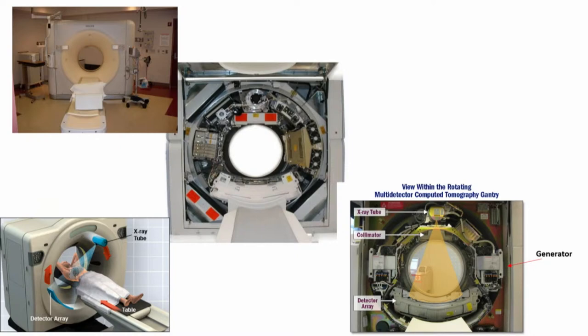This is the hardware used to generate these images. You can see the main components: the tube where energy is generated by heating up the generator, then the collimator which focuses energy toward the patient. The patient is right in the middle on the table, and on the other side are the detectors which capture the signal of the electrons after going through the patient.